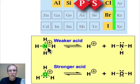Being more stable means the ammonium cation will hold on to its proton more tightly. It's less willing to give up that proton compared to the hydronium ion, making the ammonium cation a weaker acid.